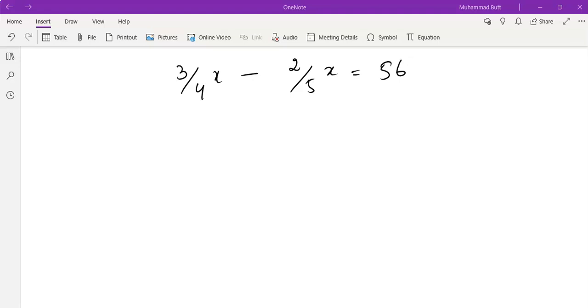As we know that these are like terms. 3 by 4x and 2 by 5x have the same variables, so these are like terms. We can solve them.